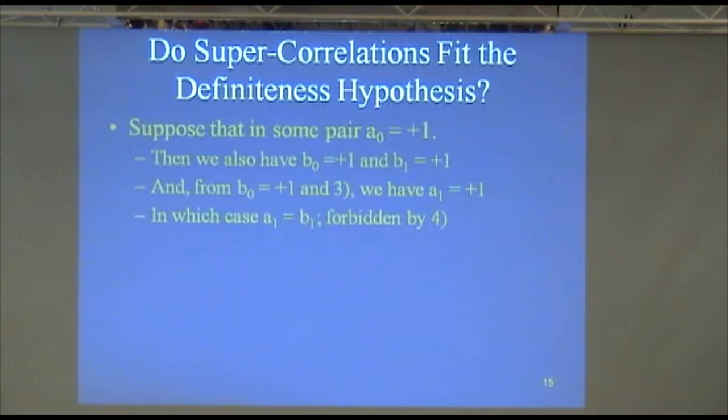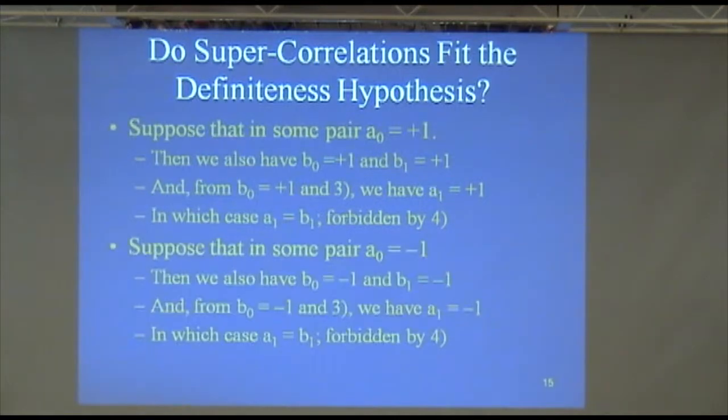Now, I'm just going to say this and we're not going to struggle with it. But the other choice is, well, you know, that didn't work out. If we say that Alice has a definite plus 1 for her A0, that didn't work. So what if Alice has a definite minus 1 for her A0? If one or the other, will that work? Well, the same kind of argument shows that it won't.